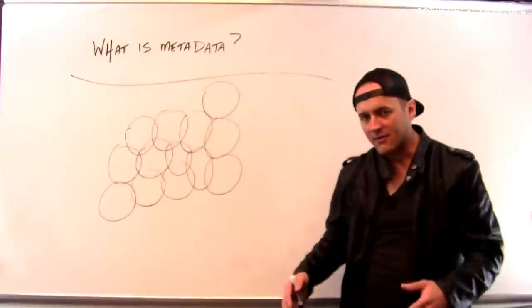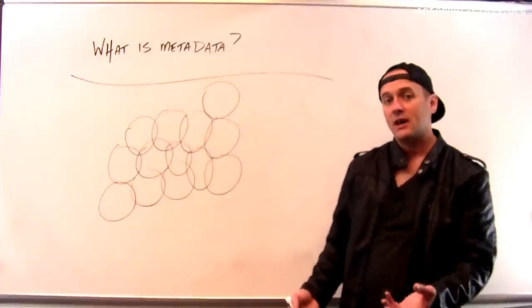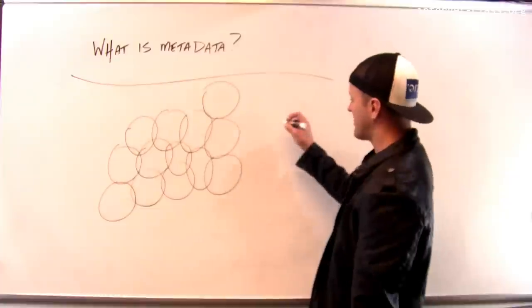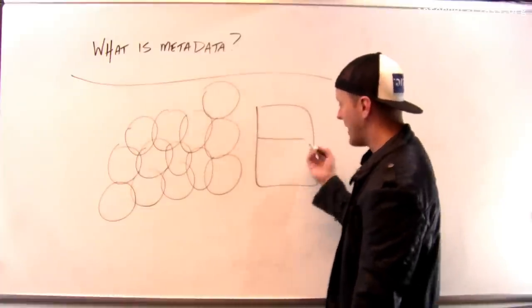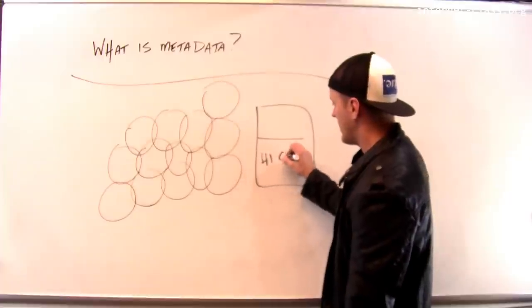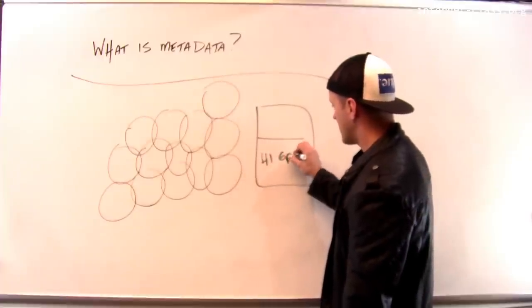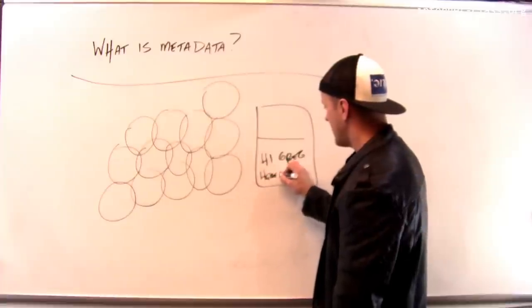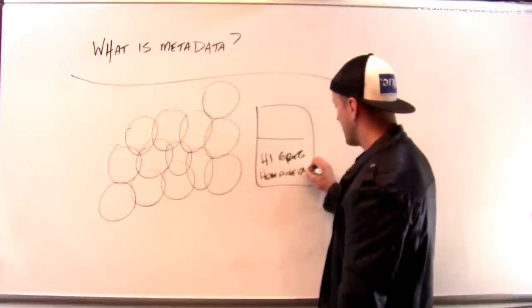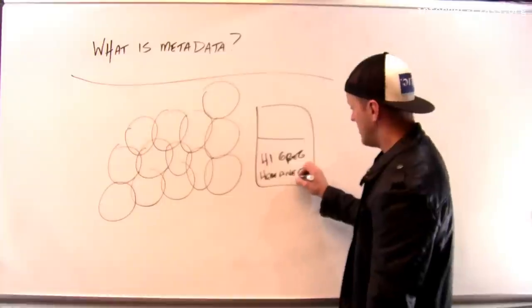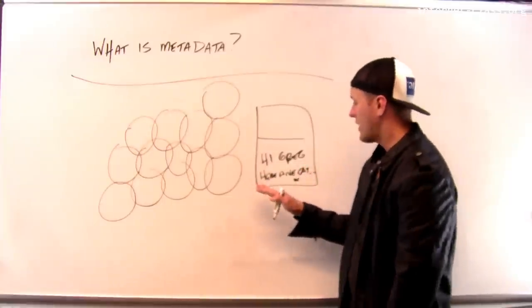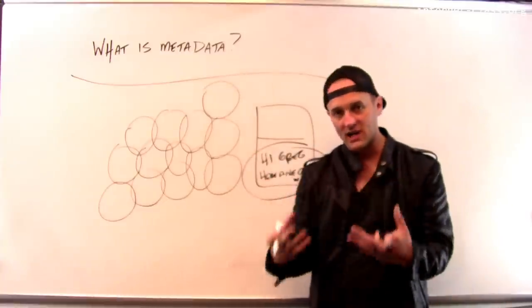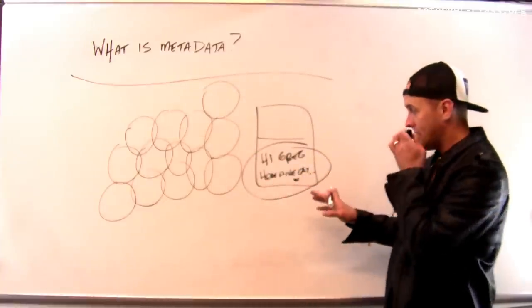Metadata can be thought of as information about a communication that is not the contents. So let me give you an example. I send an email to you. That email has a body. I say, hi, I'm going to spell his name right, hi Greg, here's a new cat picture. Okay, so this is the content, this would be considered the contents of the email, whatever I've typed into the text box.